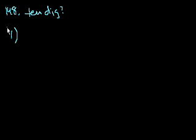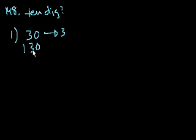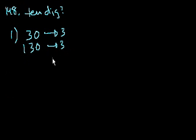Statement 1 tells us x divided by 100 has a remainder of 30. Well, then we know the tens digit is 3, right? Because 30 divided by 100 has a remainder of 30, and its tens digit is 3. 130 divided by 100 has a remainder of 30, and its tens digit is 3. Any number that when you divide it by 100 has a remainder of 30, its tens digit is going to be 3.